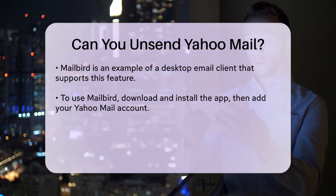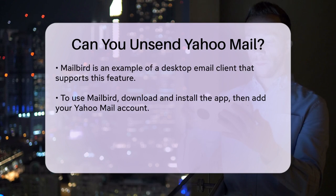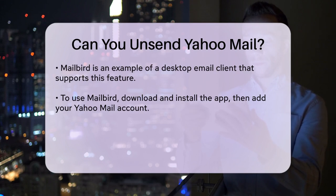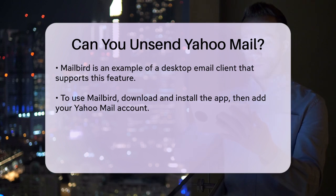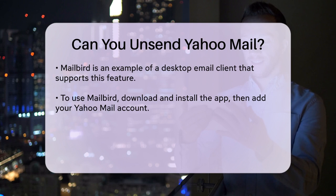Here's how it works. You download and install Mailbird, add your Yahoo Mail account, and then go to the composing tab in the settings to set up the undo send feature. You can choose a timeframe of up to 30 seconds during which you can undo the send.